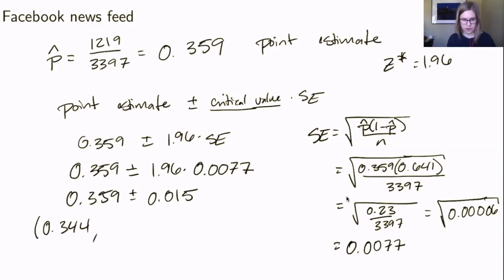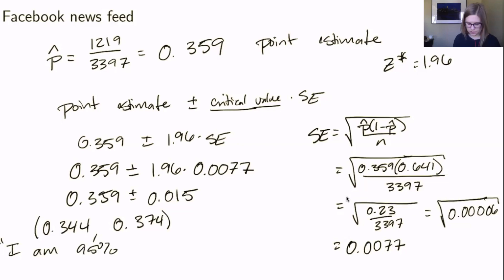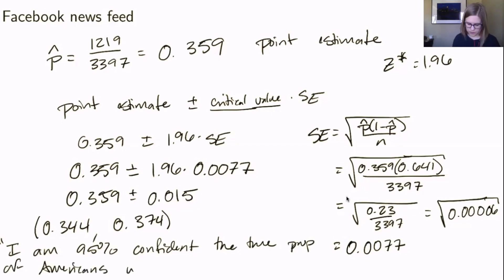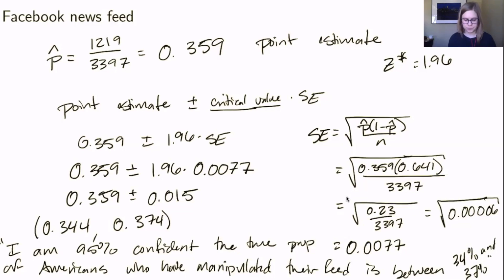Subtracting, 0.359 minus 0.015 gives 0.344, and adding gives 0.374. So our confidence interval is (0.344, 0.374). To interpret: I am 95% confident the true proportion of Americans who have manipulated their feed is between 34% and 37%.